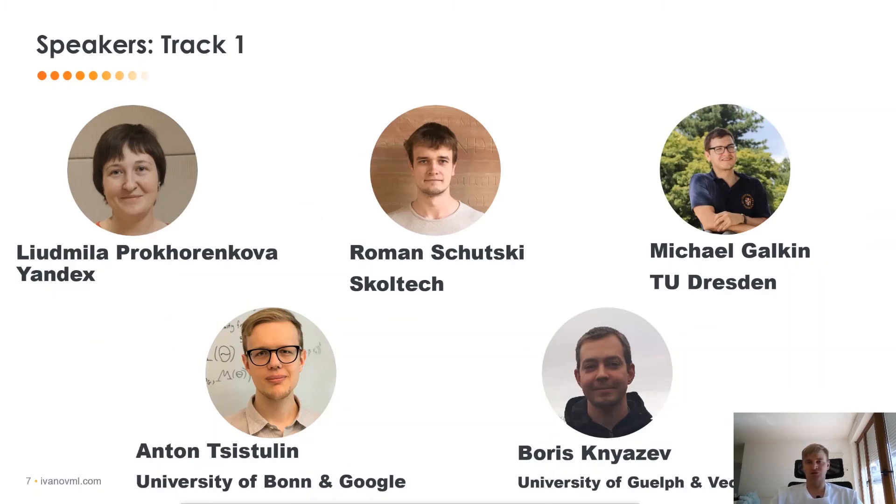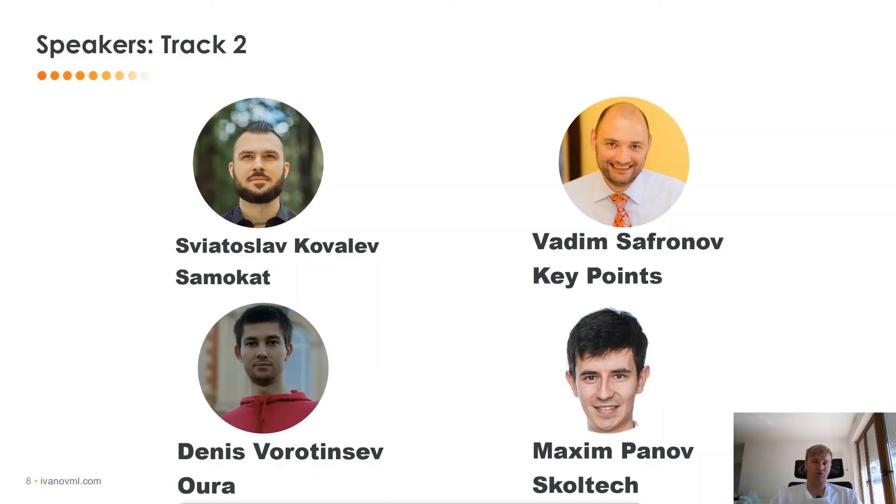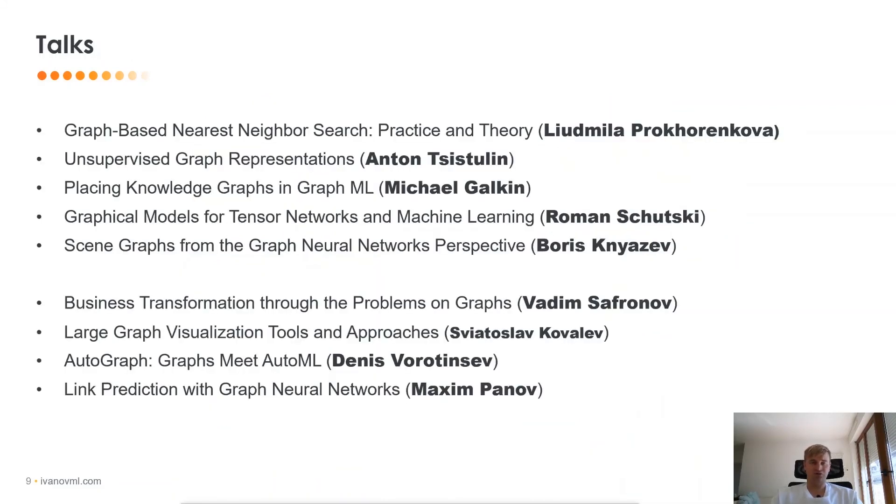Now, about this particular topic, we'll have a section at DataFest and we'll have two tracks. The first track will be more academic-like presentations and the second would be more industrial-like applications of graph machine learning. So we'll have track one with five speakers for academic-like presentations and we'll have four speakers for industrial-like presentations. And the talks they will give are the following. So for academic presentations, we will have a talk by Ludmilla about nearest neighbor search and graphs, a talk by Anton about graph embeddings, a talk about knowledge graphs by Michael, a presentation on graphical models for tensor networks and machine learning by Roman, and Boris will give a presentation on scene graphs and applications to computer vision.